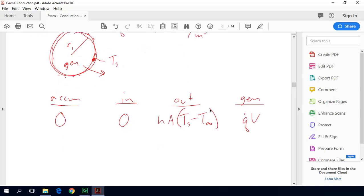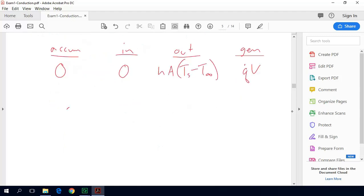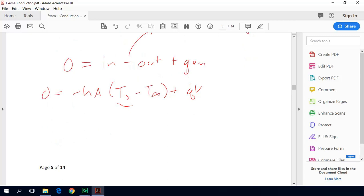When we put this into equation form, we get our accumulation is equal to in minus out plus generation. So that is minus H times A times Ts minus T∞ plus Q̇ times V equals zero. Now this is a pretty easy problem. We just solve for Ts because this is the thing we want. And so we get Ts equals Q̇ times V divided by H times A plus T∞.